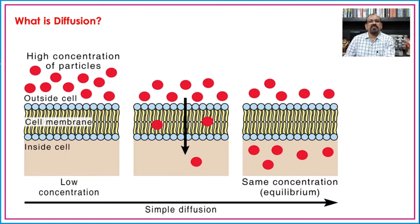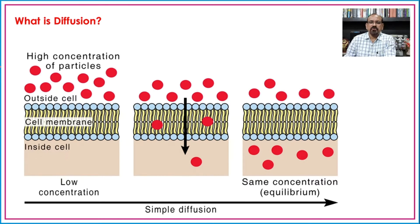Before going to see the definition of diffusion, we can see some examples around us. For example, if some gas is present inside a bottle and we open that bottle in a room, then that gas will be spread in the complete room. Similarly, if we put one spoon of sugar or salt in a glass of water, there will be spreading or distribution of the salt or sugar throughout the water in the glass.